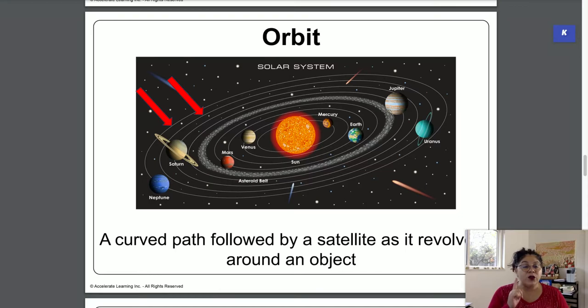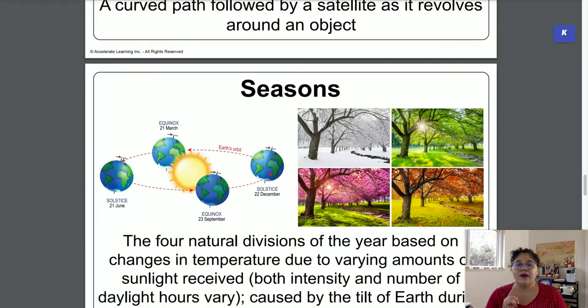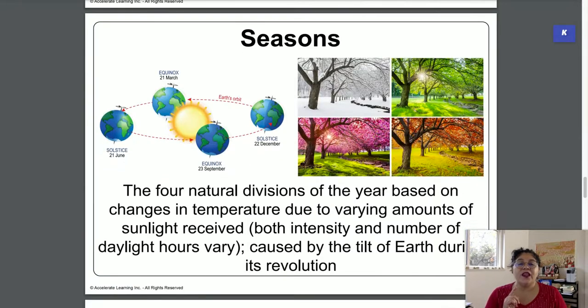The next word is seasons. Seasons are a division of the natural year into different types of climates, right? A different amount of sunlight during the day, a different amount of warmth, and that effect of sunlight changes everything. It changes the moisture that's available, it changes the temperature.